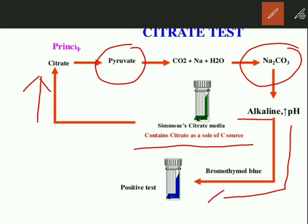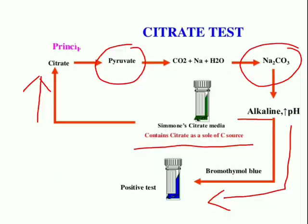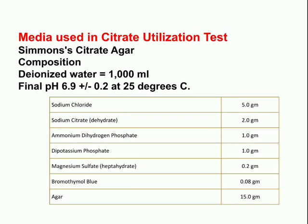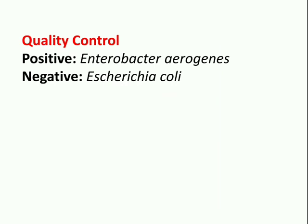Due to the increase in pH, the indicator bromothymol blue is changed from green to blue in color, showing a positive reaction. The Simmons citrate agar contains sodium chloride, sodium citrate, ammonium dihydrogen phosphate, dipotassium phosphate, magnesium sulfate, bromothymol blue as an indicator, and agar.